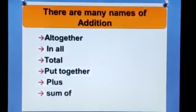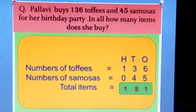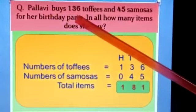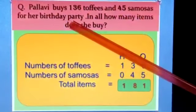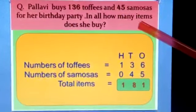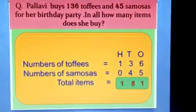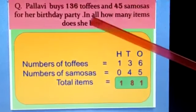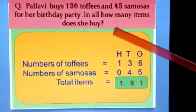So we have a word problem or story problem here. Pallavi buys 136 toffees and 45 samosas for her birthday party. In all, how many items does she buy? So what is the question? The question is, in all, how many items does she buy?